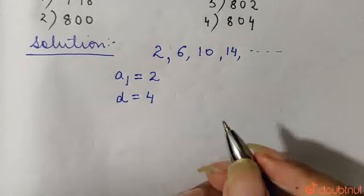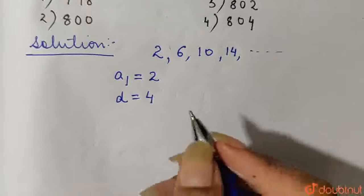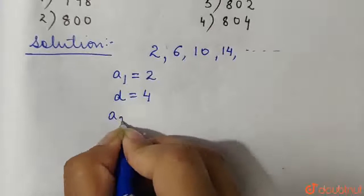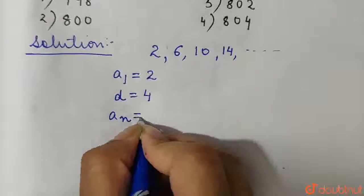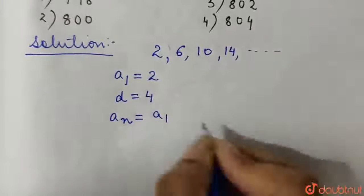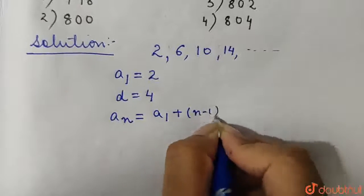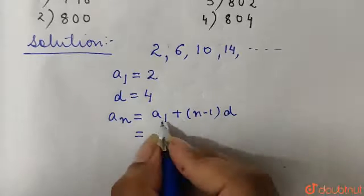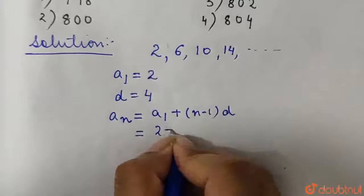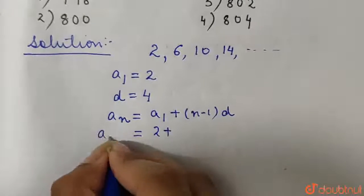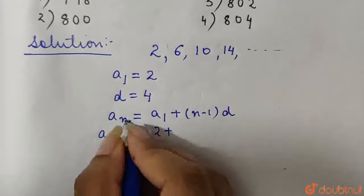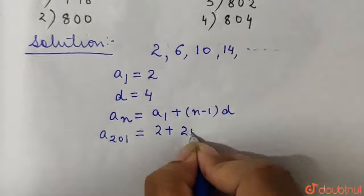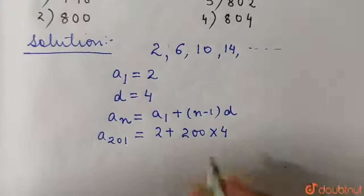Now we intend to find the 201st term of this AP. So we know that the nth term of an AP is obtained as the first term a1 plus (n-1) into d. So from here a1 which is 2, we have to find the 201st term. That means here n is 201. So n-1 would be 200 and d which is 4.